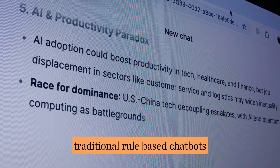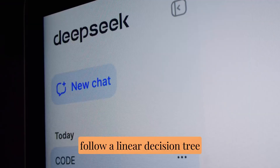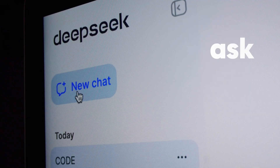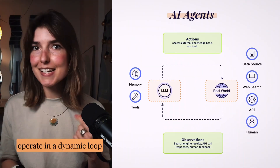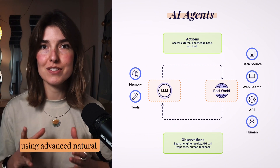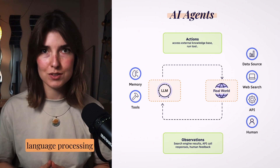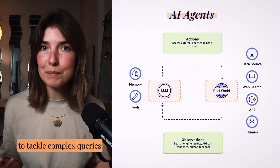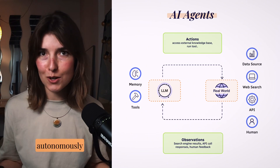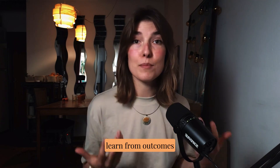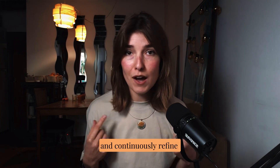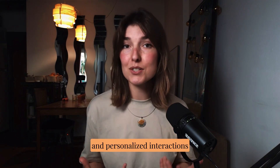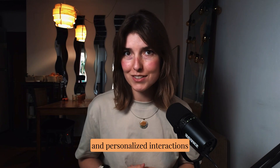Traditional rule-based chatbots follow a linear decision tree — ask, answer, and done. AI agents, on the other hand, operate in a dynamic loop using advanced natural language processing to tackle complex queries autonomously. They experiment, learn from outcomes, and continuously refine responses for more natural and personalized interactions.